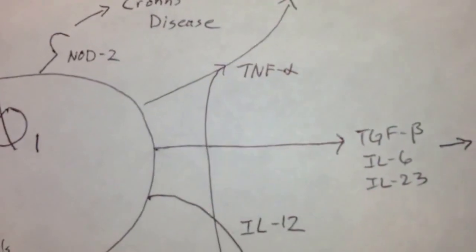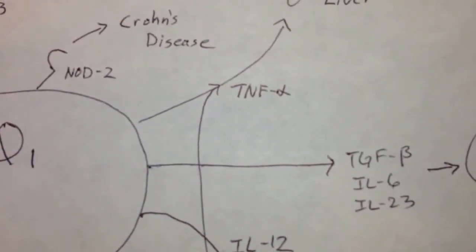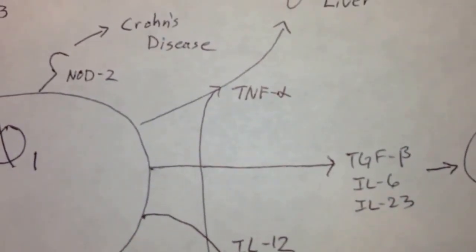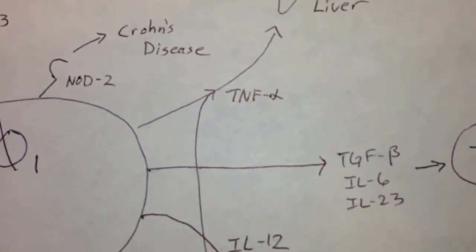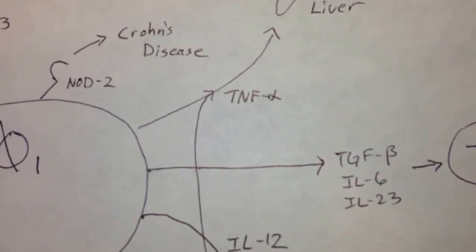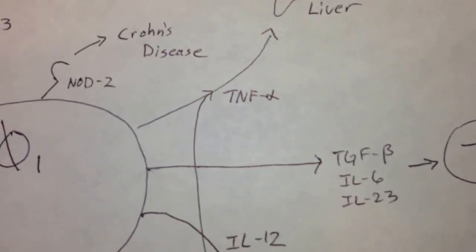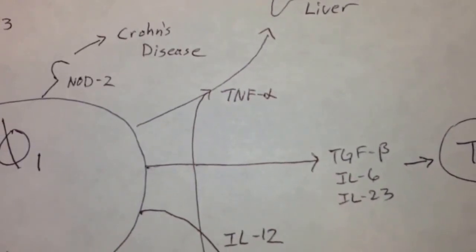NOD-like receptor number 2 is also here on the type 1 macrophage, just because we need to know that Crohn's disease is related to NOD-2. And that's apparently one of the only NOD receptors we need to know, is NOD-2.